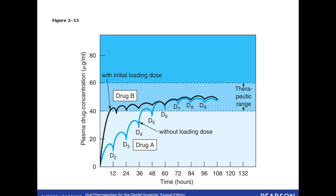Eventually, a plateau is reached where the level of drug in the blood is maintained continuously within the therapeutic range. Drug A and drug B are both administered every 12 hours, but drug B reaches the therapeutic range faster because a loading dose of drug B was given. With drug A, no loading dose was given, so it takes longer to reach the therapeutic range.